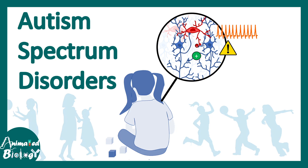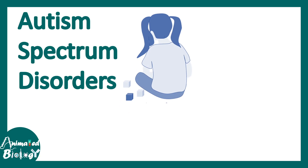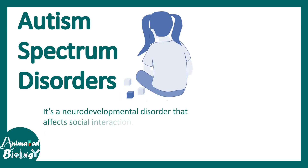In this video we'll be talking about autism spectrum disorders. This is going to be an overview, and in a subsequent video we are going to talk about this disease in detail. Autism spectrum disorder is a neurodevelopmental disorder that affects the ability for social interaction, communication, and social behavior.